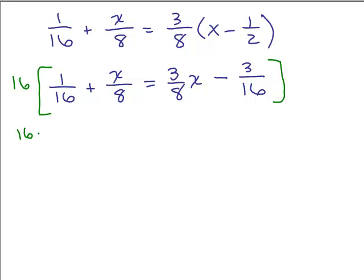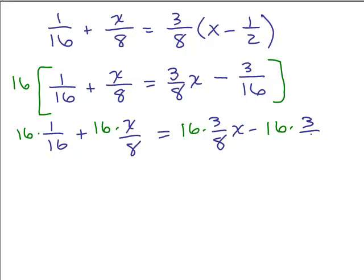So we have 16 times 1/16 plus 16 times x/8 equals 16 times 3/8x minus 16 times 3/16. And you might not need to write this step out. I do it so everybody can see what's going on. Those cancel, it cancels to 2, it cancels to 2, and these cancel completely.